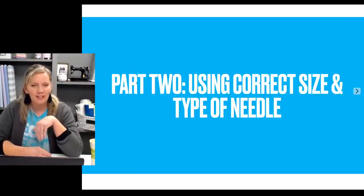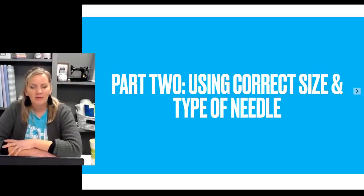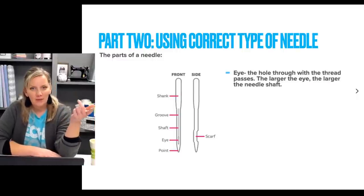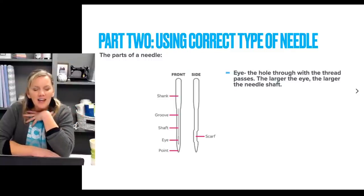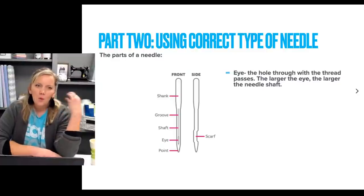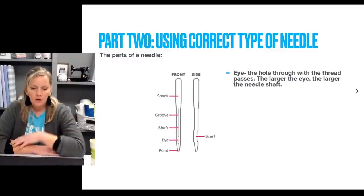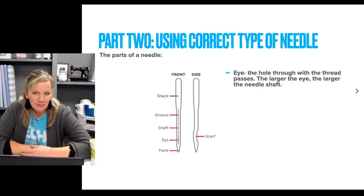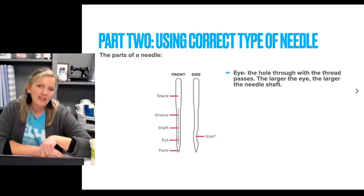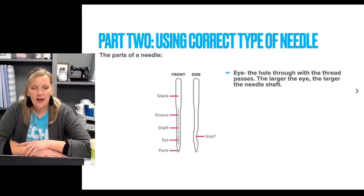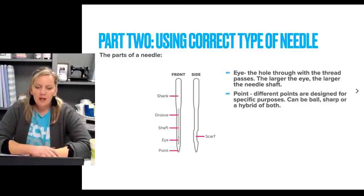Part two is using the correct size and type of needle. That needle is performing a very important function — it's taking the thread down and bringing it back up very quickly while you're moving the fabric or the machine. I love knowing why things work the way they do, so let's talk about the parts of a needle. The eye of the needle is obviously where the thread pulls through at the bottom, but different size needles have different size eyes for different size threads. The size of the needle you use depends on the thread that you're using.